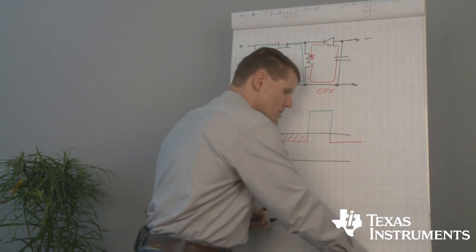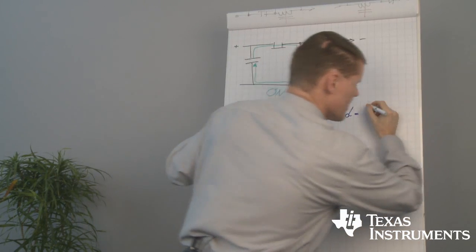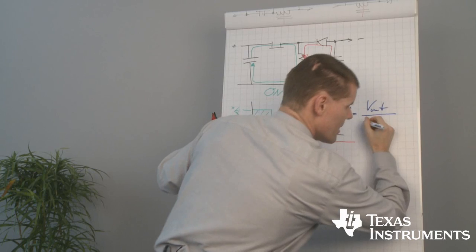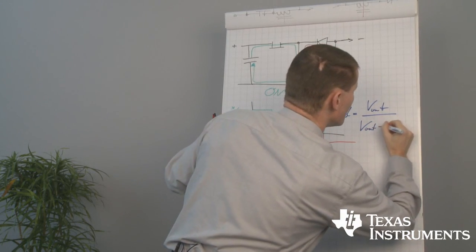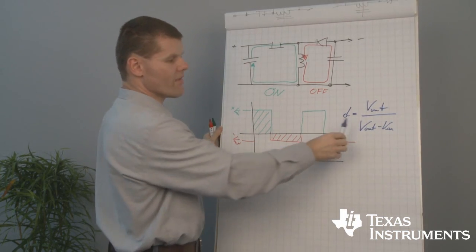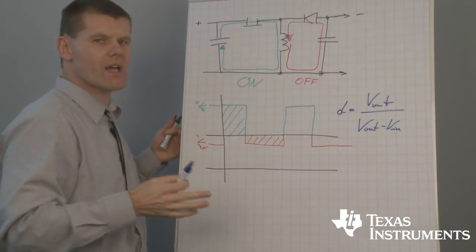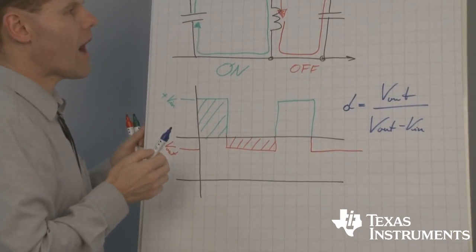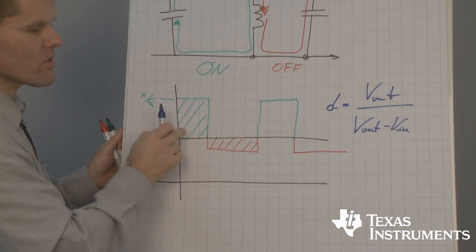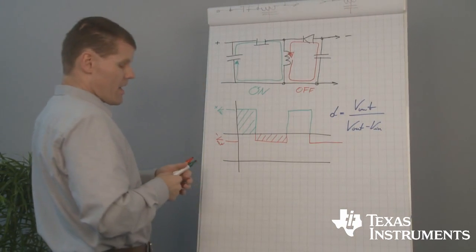Now let's have a look at the duty cycle. The duty cycle is very easily the output voltage divided by the output voltage minus the input voltage. That's the duty cycle inside our inverter power stage, due to these two equal areas at continuous conduction mode.